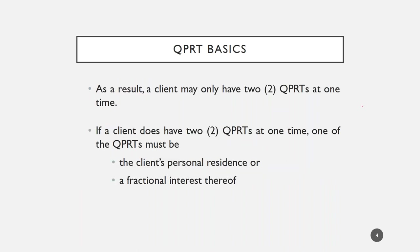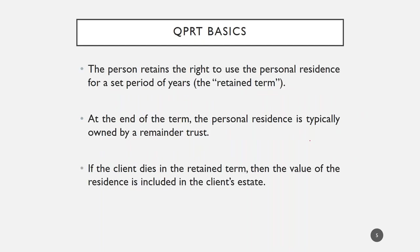Because there's a limitation on the number of QPRTs a client can fund at one time — meaning a client can only have two QPRTs at one time — if you have two QPRTs, one of them would be the QPRT for the principal residence, and one of them would be a fractional interest in a secondary or other residence. The main thing with a QPRT is that when you create it, the grantor places the house into a trust and retains the right to reside rent-free for a number of years, called the retained term.